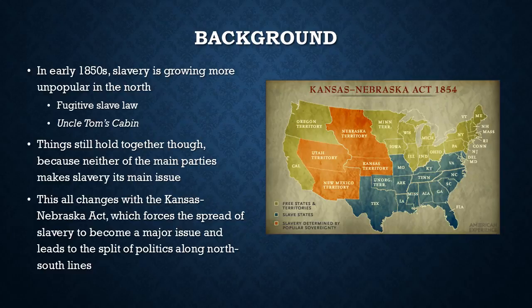But in spite of this growing tension between North and South, things were still held together for the most part. The main reason for this is that the two main parties, the Whigs and the Democrats, didn't make slavery a key issue — they sort of just avoided talking about slavery. But this is all going to change because of the Kansas-Nebraska Act, which is going to force the spread of slavery to become a major issue and lead to the split of US politics between anti-slavery in the North and pro-slavery in the South.